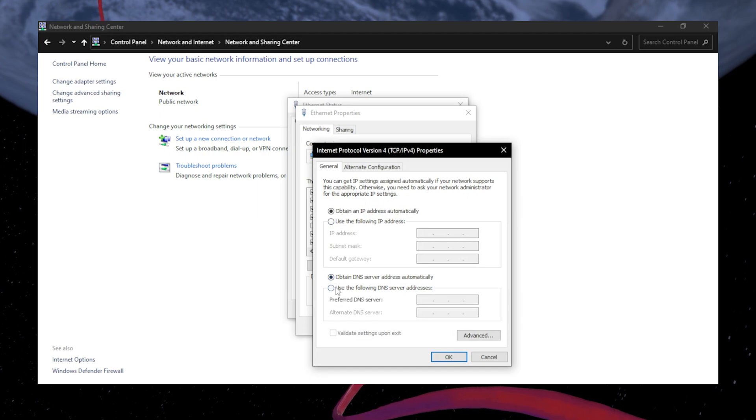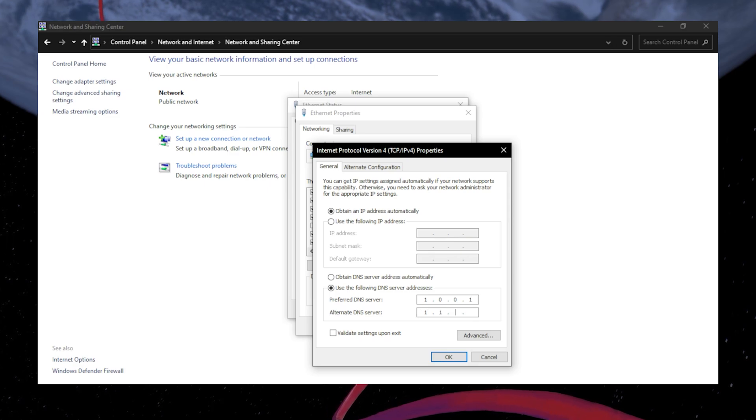Select the second option, Use the following DNS server addresses, in this window. Enter the values 1001 in the first field and 1111 in the second field. Then, click OK to apply your changes.